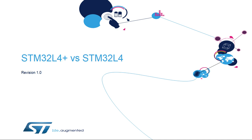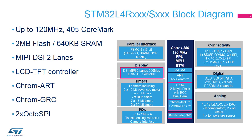This module presents the key differences between the STM32L4R/S-series and the STM32L476/L486 devices. The STM32L4 Plus series stretches the STM32L4 technology by offering higher performance — 120 MHz, 405 CoreMark executing from internal flash memory. The new STM32L4 Plus embeds up to 2 MB of dual-bank flash memory and 640 KB of embedded SRAM.